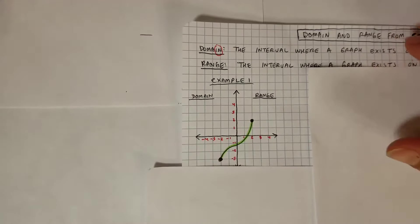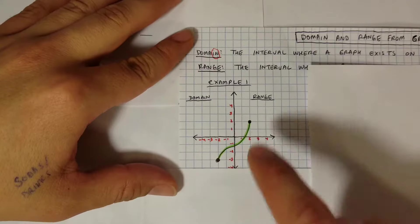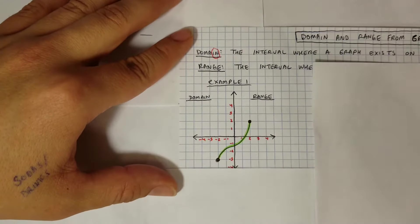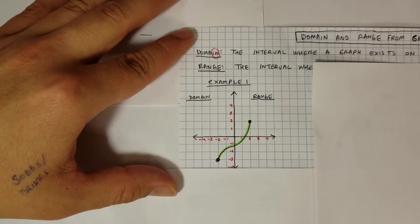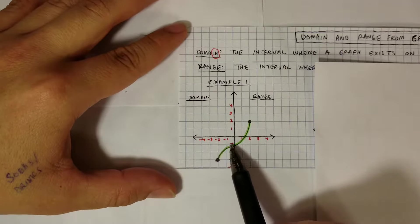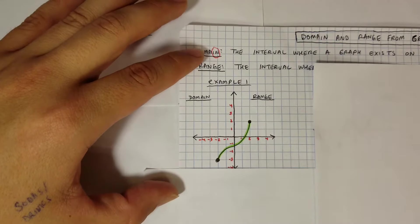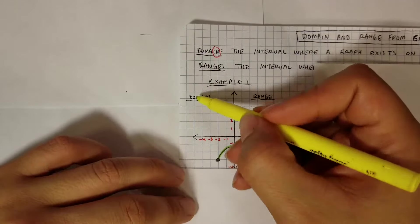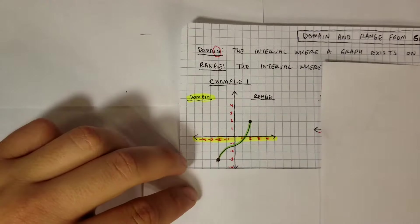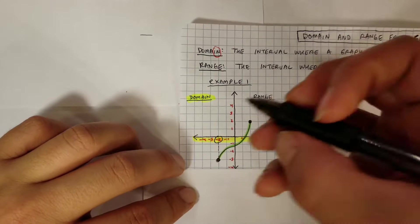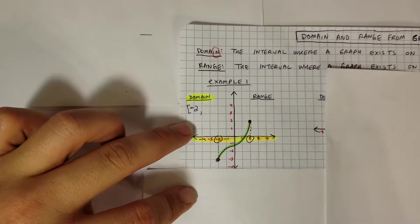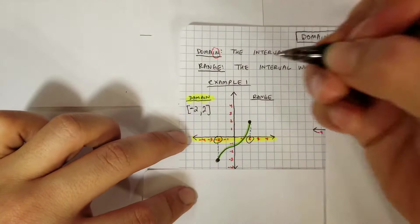Closed circle means we're including those numbers. This graph has a starting point here at negative 2 and ends at positive 2. The domain is from left to right, strictly talking about the x-axis. This starts at negative 2 — closed circle, so a bracket. It ends at positive 2 — closed circle again, so a bracket. So the domain is [-2, 2].